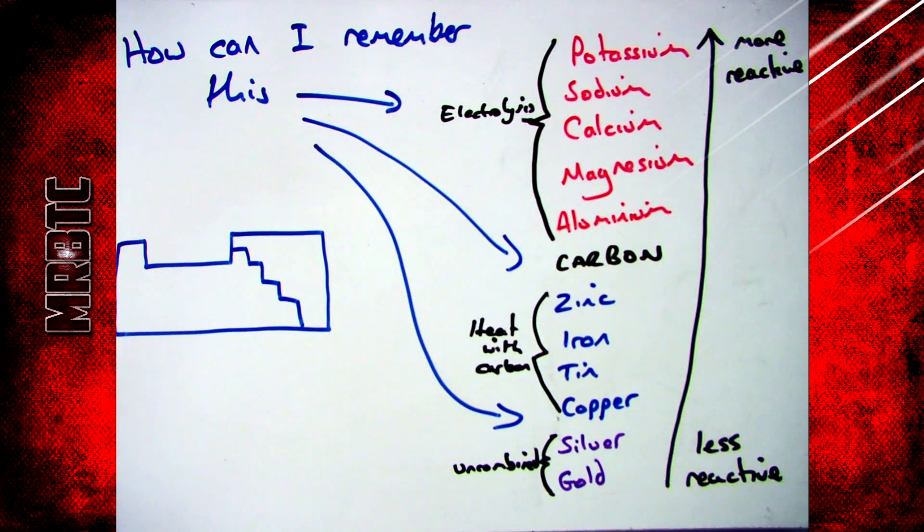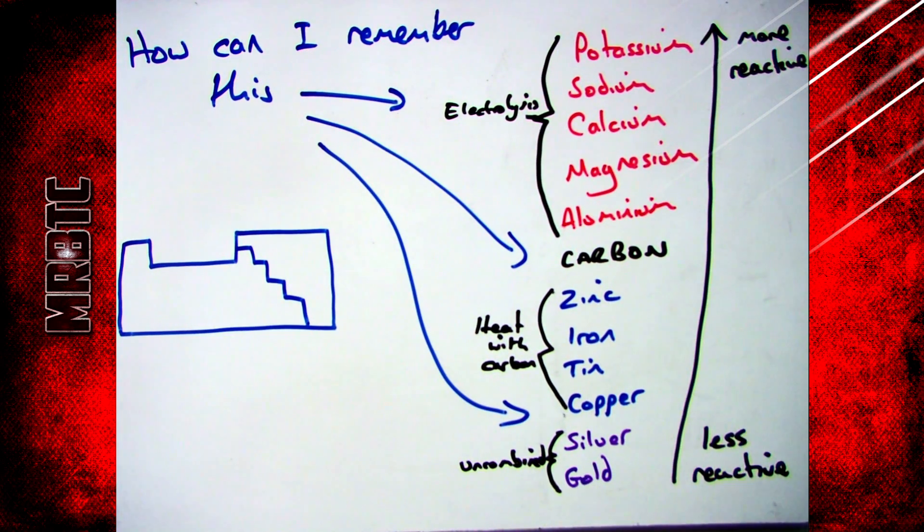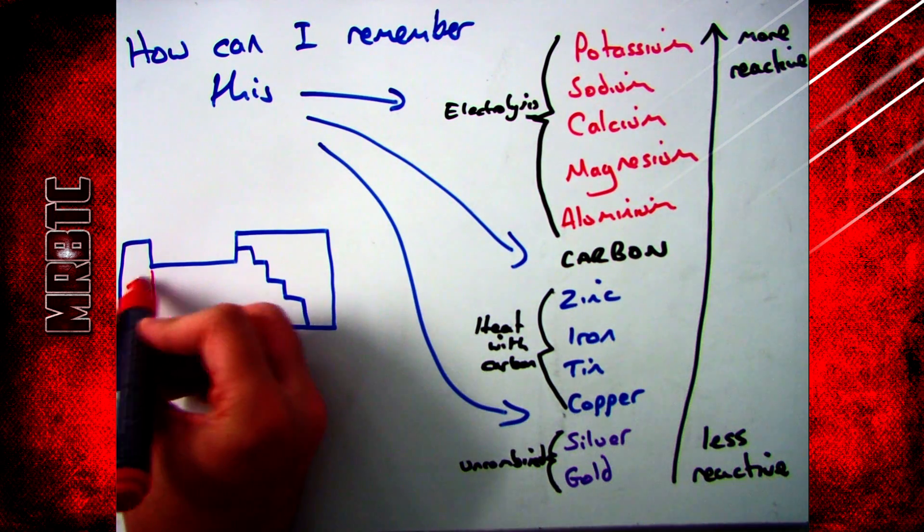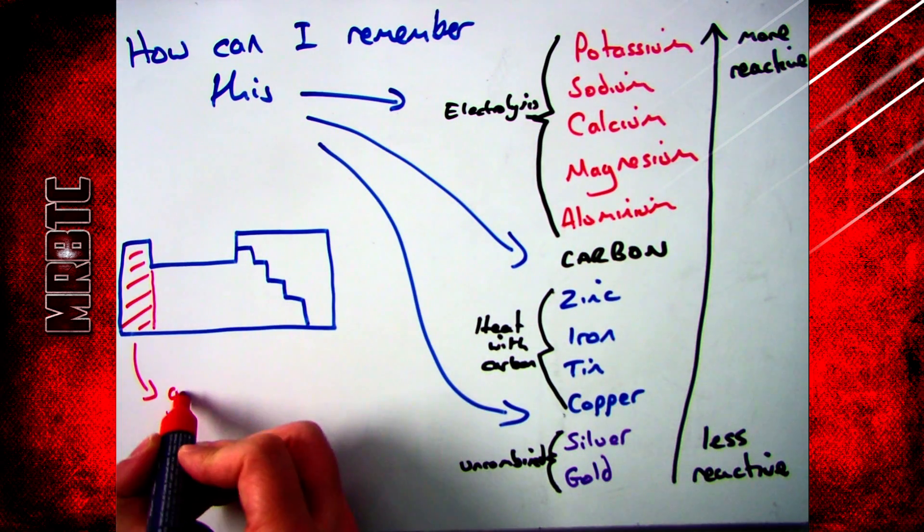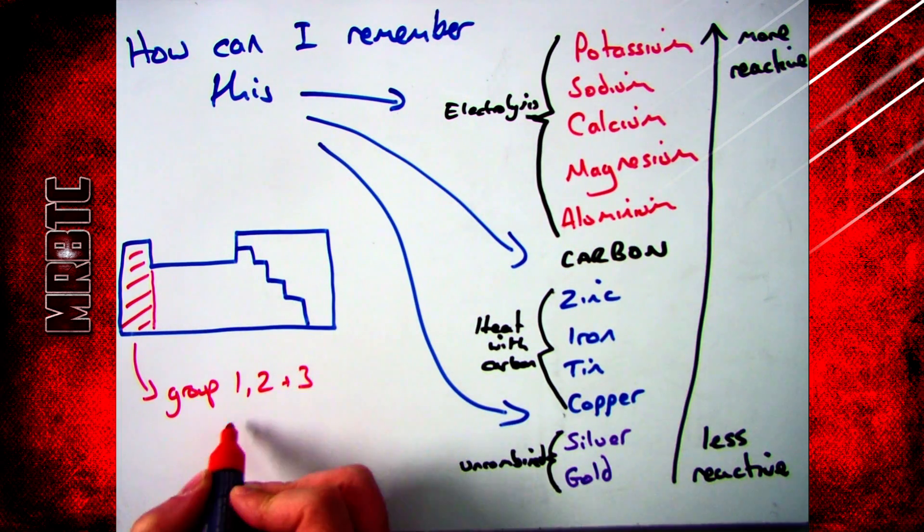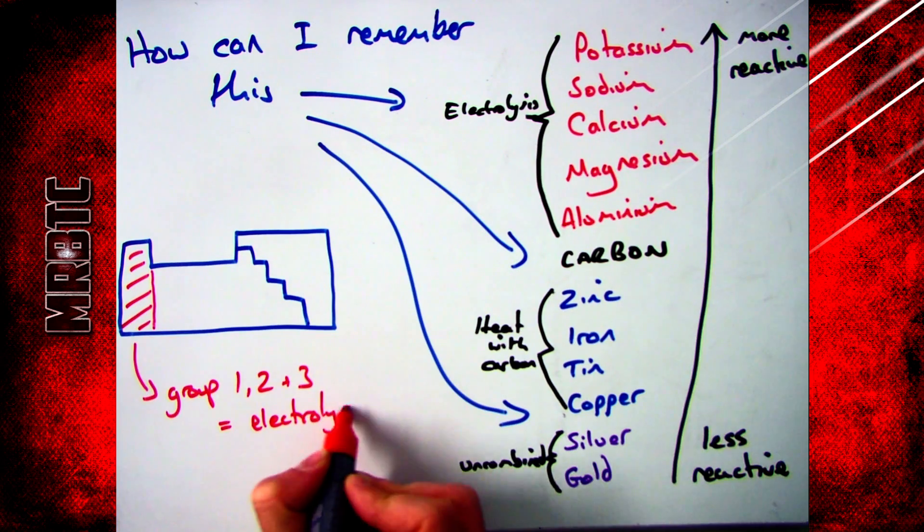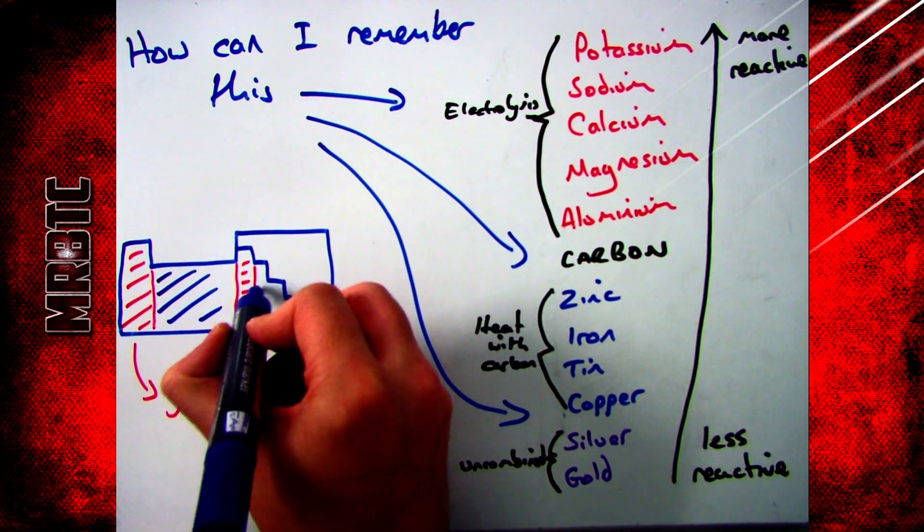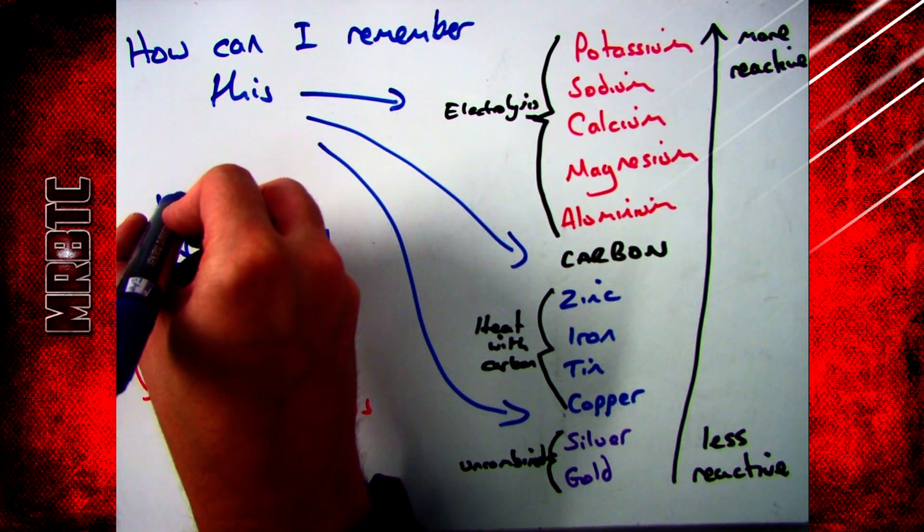How can you remember which method to use? In the exam, you're not going to have the reactivity series, so it's important to be able to figure it out. My suggestion to you is, go with the rule that groups one, two, and three are the really reactive ones, so those are the ones you use electrolysis with. The block in the middle, and everything else that's a metal, use heating with carbon.